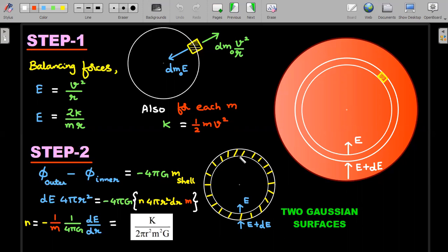The value of flux outer minus flux inner can be written as dE × 4πr². On the right-hand side, the manipulation you'll do is -4πG times the mass inside that shell. The mass inside should be written as the number per unit volume times volume multiplied by mass of each particle, which is n × 4πr²dr × m.